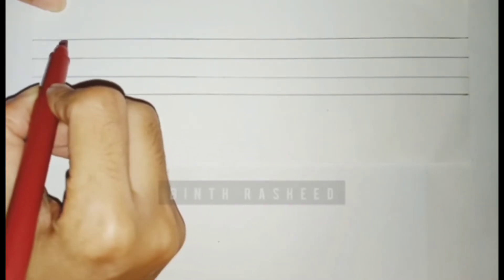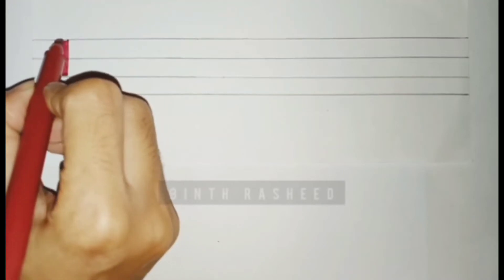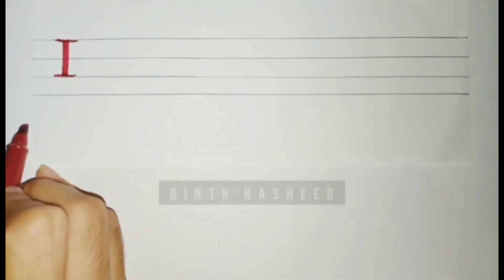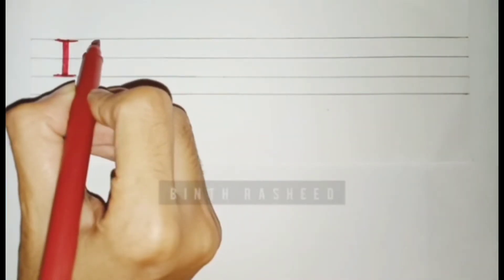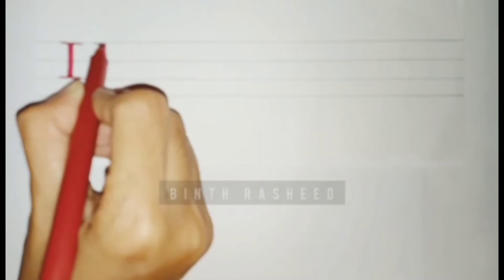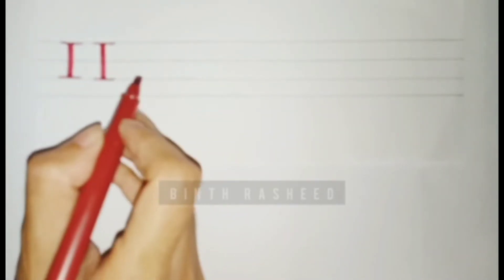Now to write capital I, you start from the top and draw a standing line downwards, then a sleeping line on the top and one more sleeping line on the bottom. Again, the standing line downwards, a sleeping line, and one more sleeping line. So this is capital I.